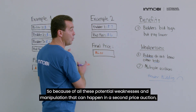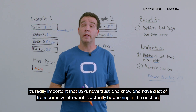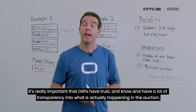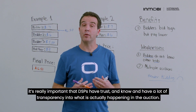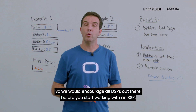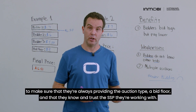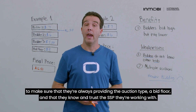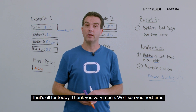Because of all these potential weaknesses and manipulation that can happen in a second price auction, it's really important that DSPs have trust and transparency into what is actually happening in the auction. We would encourage all DSPs, before working with an SSP, to make sure they're always providing the auction type, a bid floor, and that they know and trust the SSP they're working with. That's all for today — thank you very much, we'll see you next time.